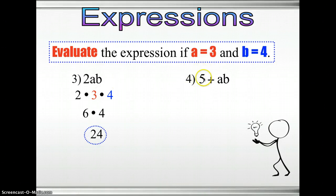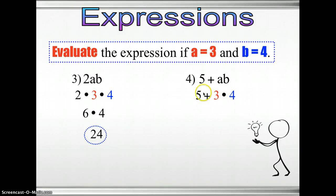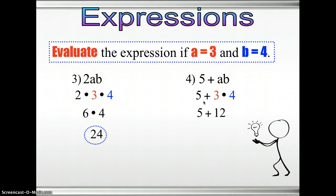Next example: 5 plus ab. There is no operation symbol between a and b, so it's multiplication. Using the order of operations, we multiply first: a times b is 3 times 4, which is 12. So 5 plus 12 equals 17.